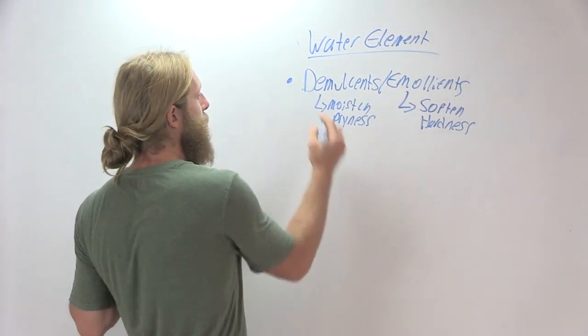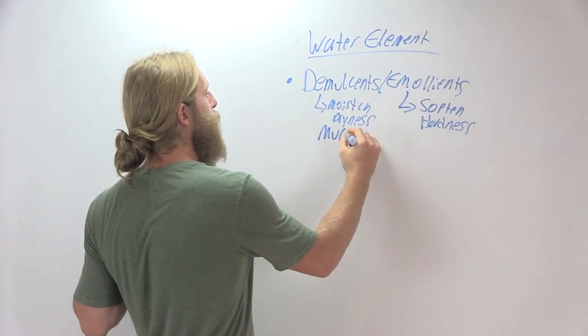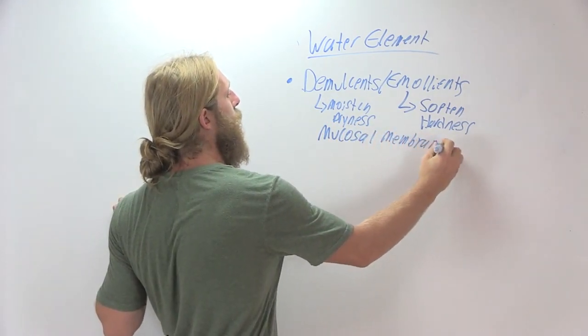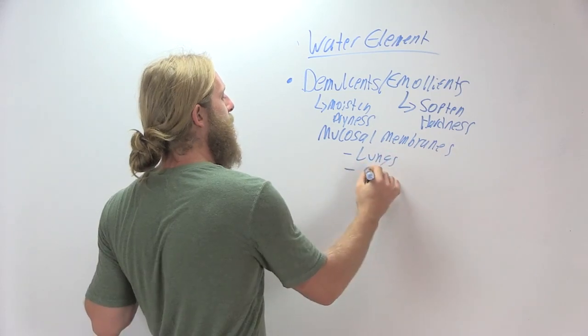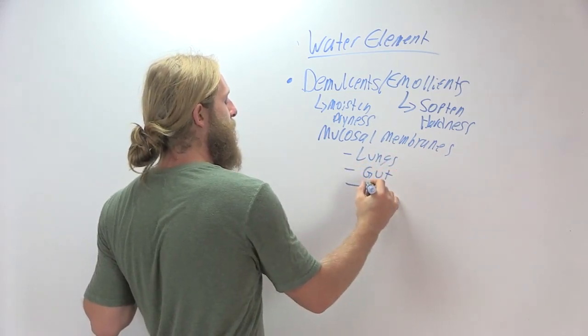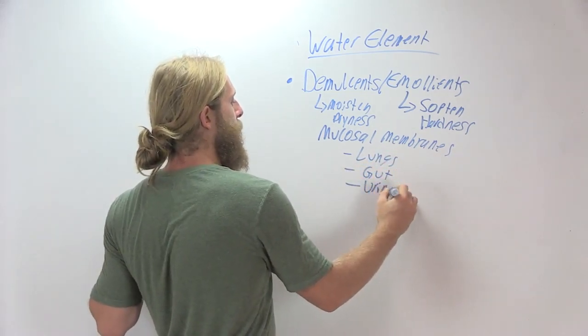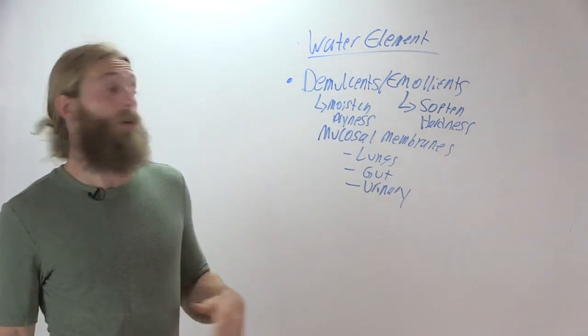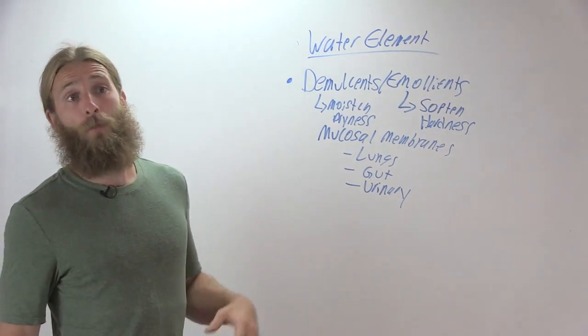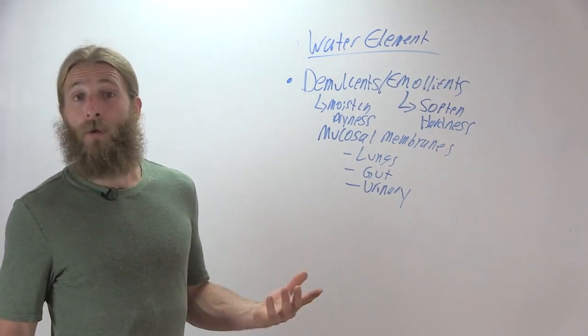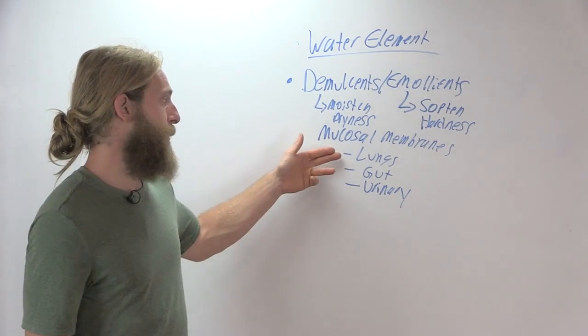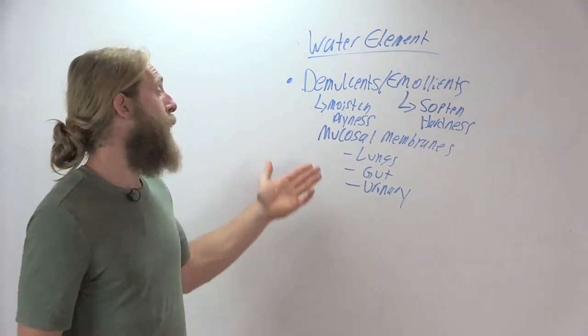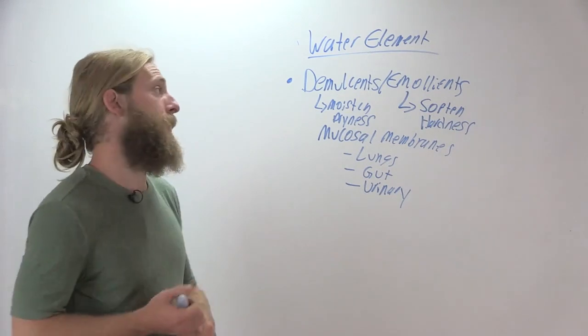These are remedies that typically contain mucilaginous polysaccharides that have a sweet flavor to them and that ultimately generate yin inside the body, meaning that they increase hydration and moisture within the tissues, predominantly within the mucosal membranes. That's really where we see most of our demulcents work. And again, that's the lungs, that's the gut, and that's the urinary tract. And we do have certain herbs that work on all of these very nicely.